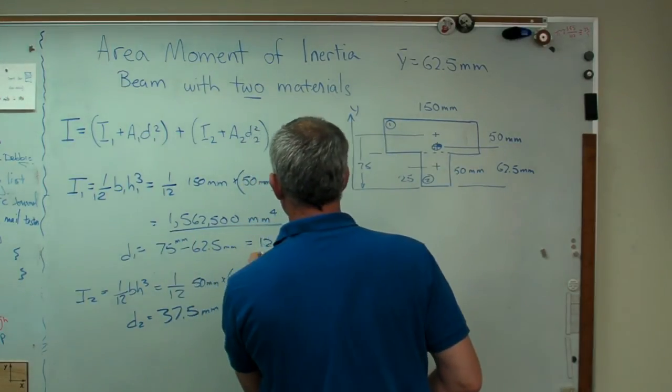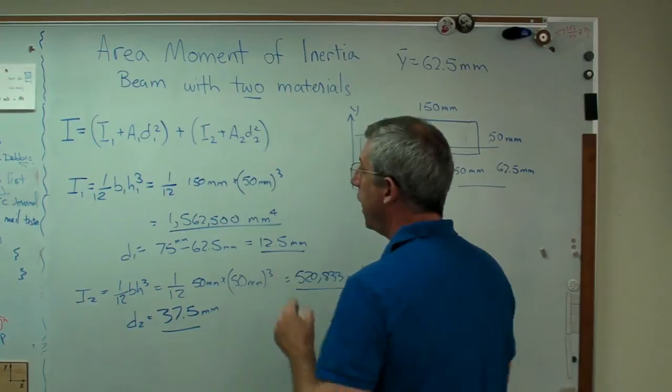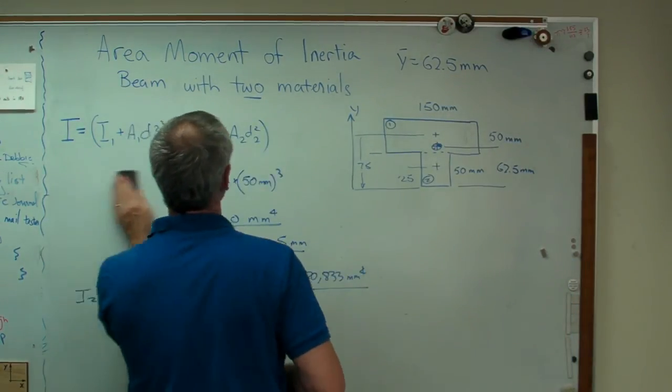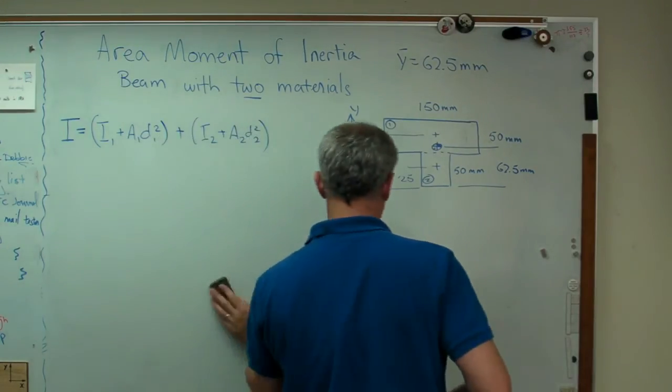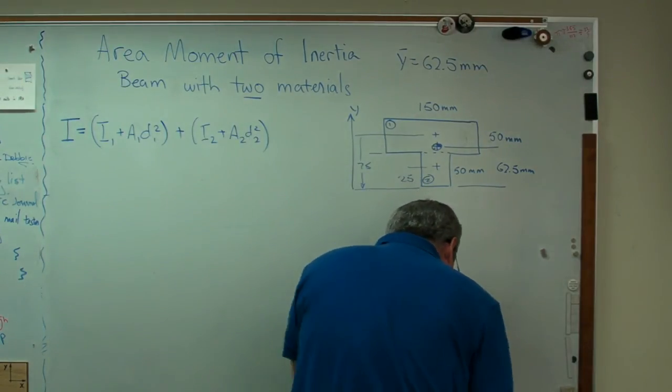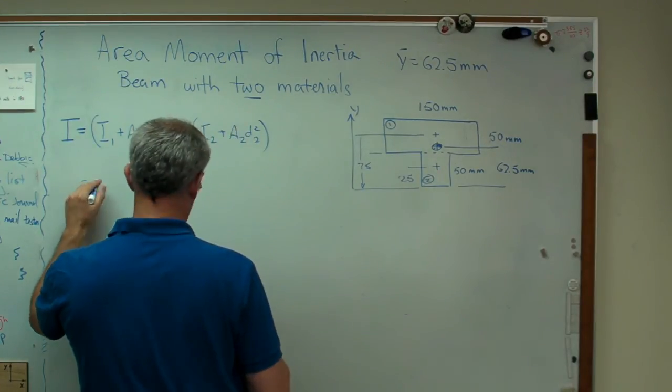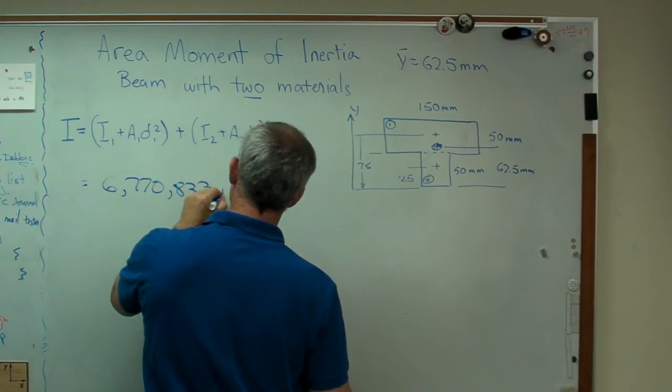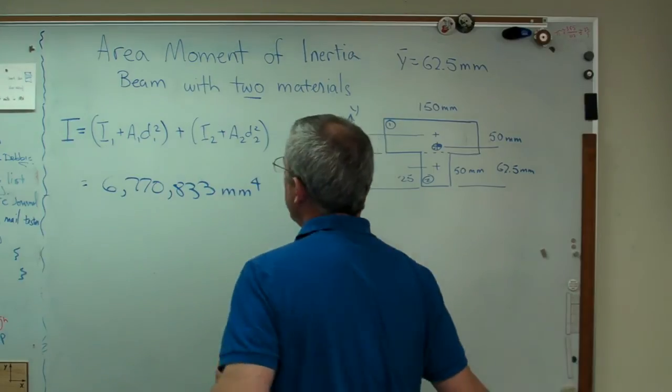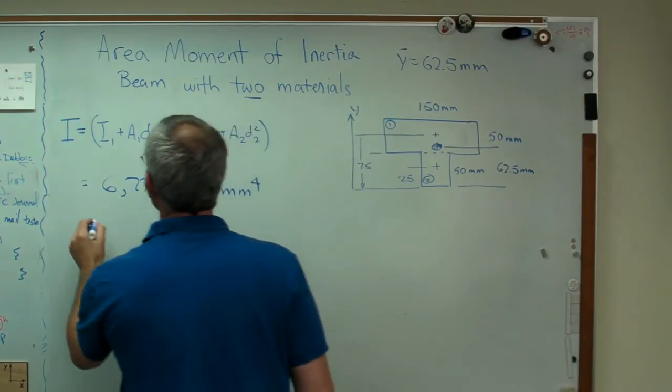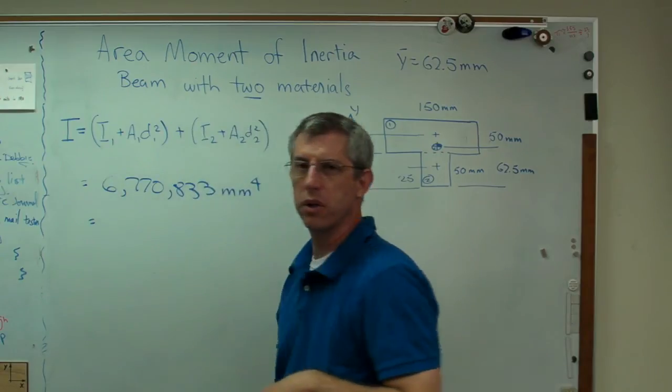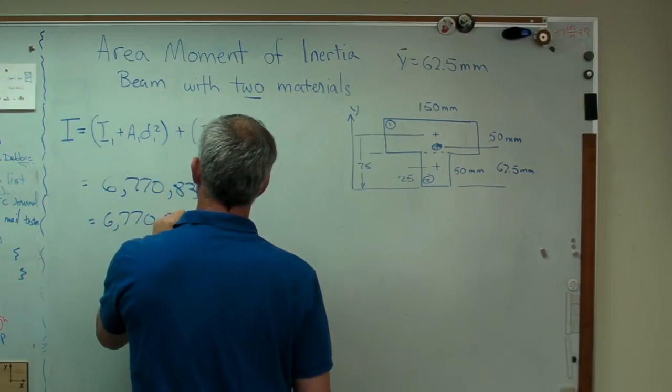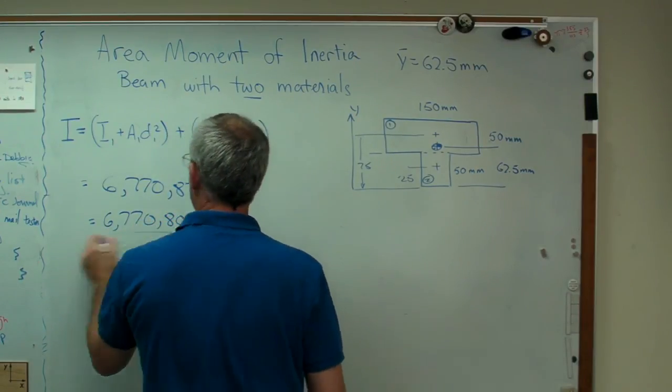So we've got this number, this number, this one, this one, and we had the areas before, so let's just add all those up. Add all those up. We're going to get 6,770,833 millimeters to the fourth. Now, that's an awful lot of significant digits. If I was having my students do that, we might work to four or five significant digits. Let's work to five. I might report it that way.